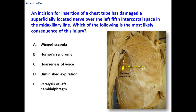Serratus anterior muscle is attached on one side to the upper ribs, and on the other side to the medial border of the scapula — specifically the anterior aspect of the medial border of the scapula. The muscle protracts the scapula and helps in rotating the scapula, such as during abduction.